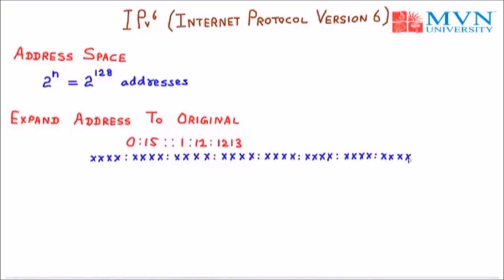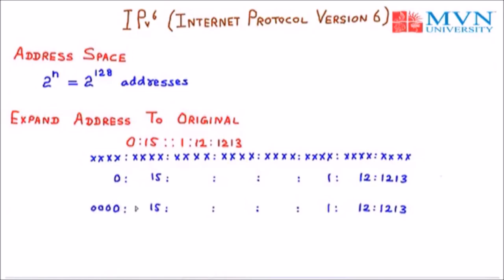Now we write the values one by one. The first block is 0, then 15. Since we have a double colon, we skip all the middle fields and start filling from the last. The last blocks are 1, 2, 1, 3; the previous one is 12; and before that is 1. In the third step, replace all blank fields with 0000. So the empty positions become 4 zeros, 2 zeros filling out to 4, and so on — four zeros for each empty block. This gives the original full IPv6 address.